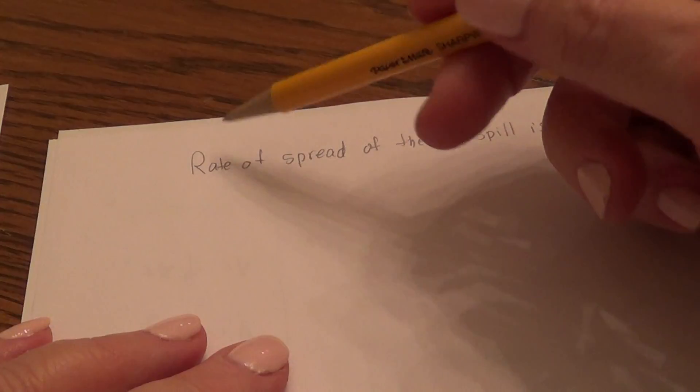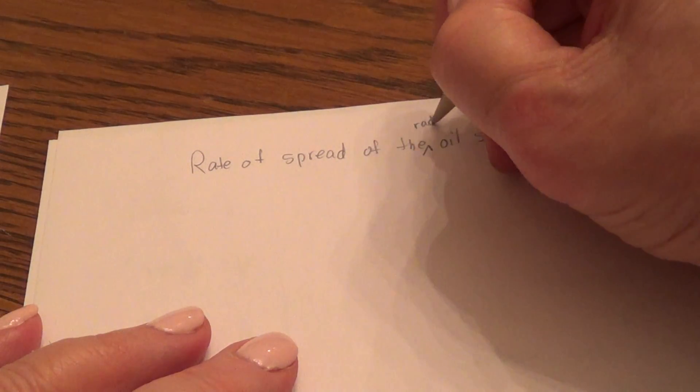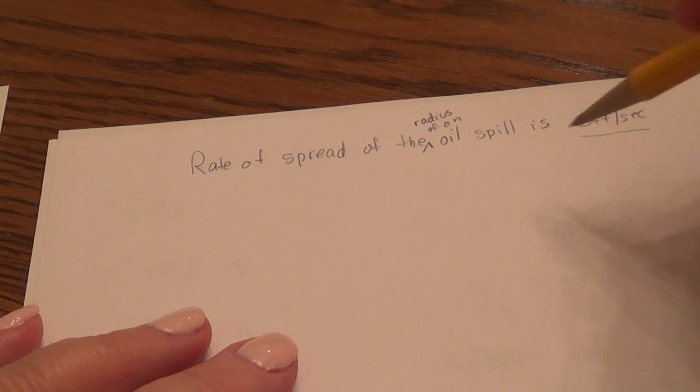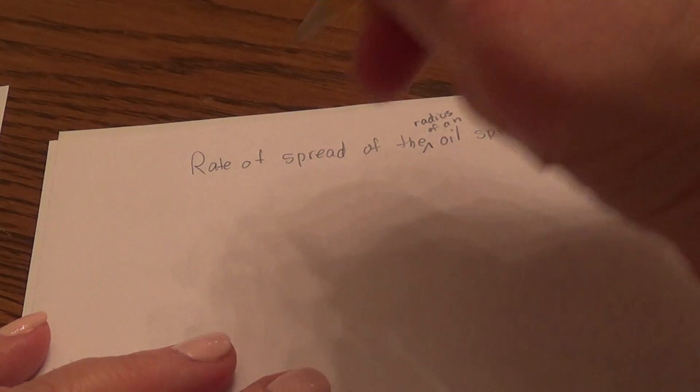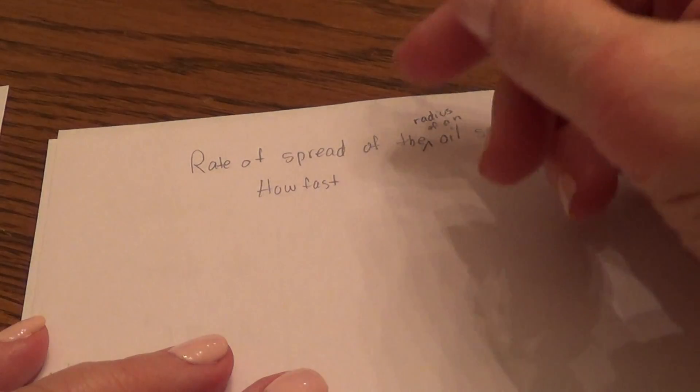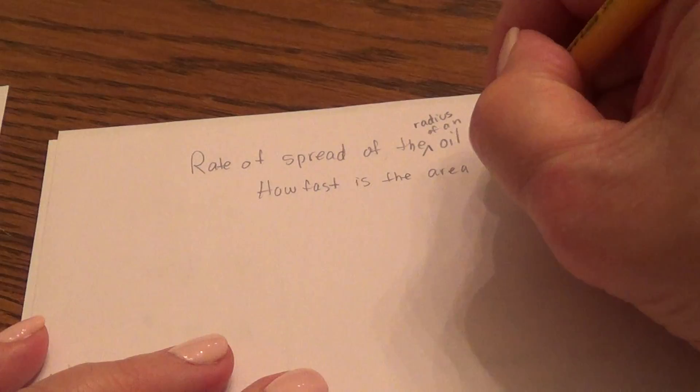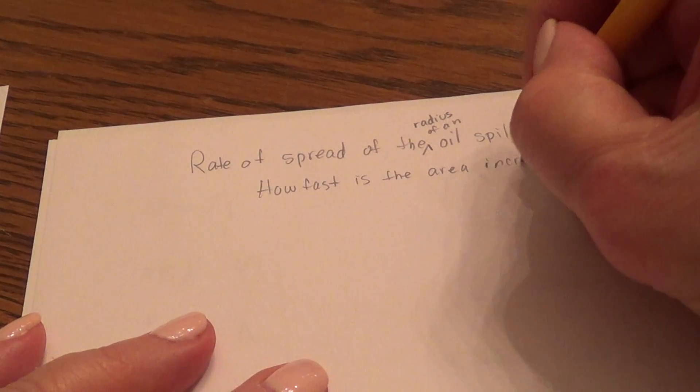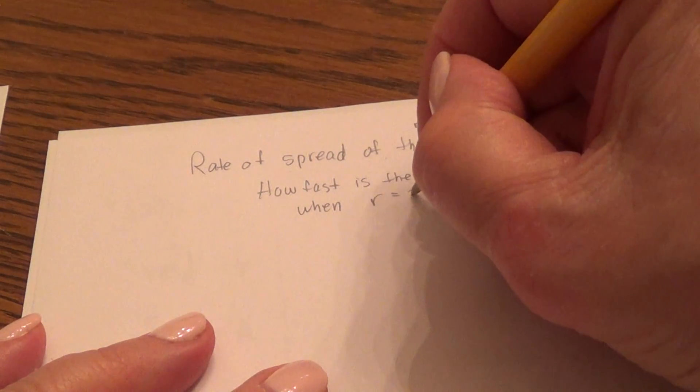So the rate of spread of the radius of an oil spill is 3 feet per second. So we're looking at a circular spot of oil in the water that's spreading quickly. So I want to know how fast is the area increasing when the radius is 30 feet.